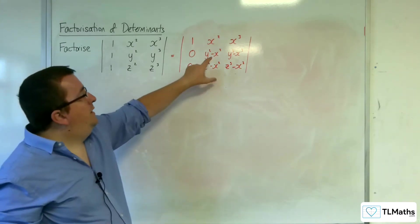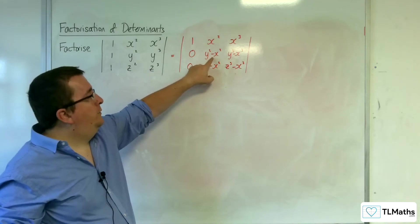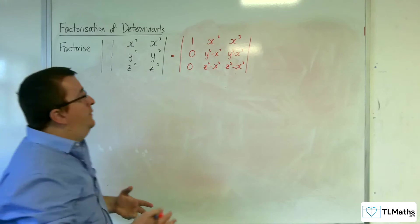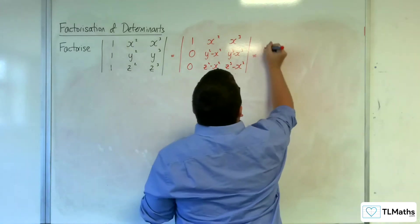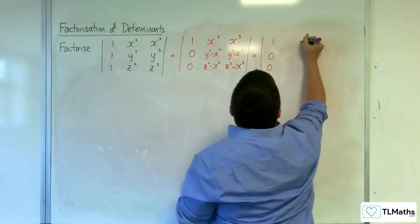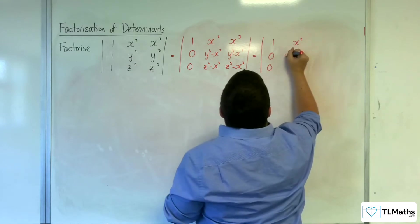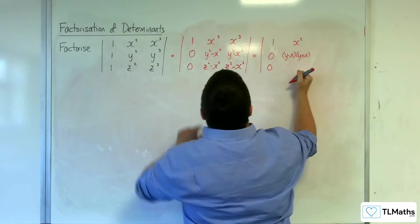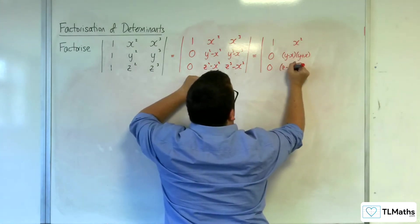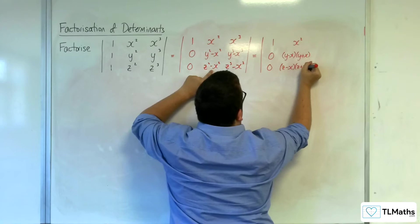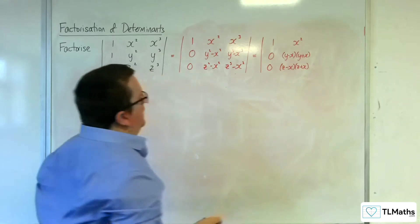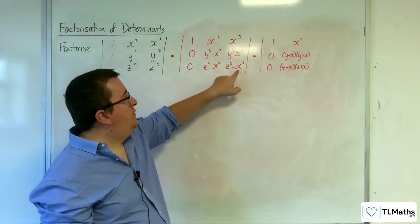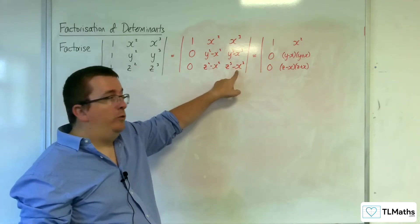The next thing to do is recognise that y squared take away x squared is the difference of two squares, so that can be factorised. I can write this as (y − x)(y + x), and similarly (z − x)(z + x). Now I'd like to write each of these in a fully factorised form as well.